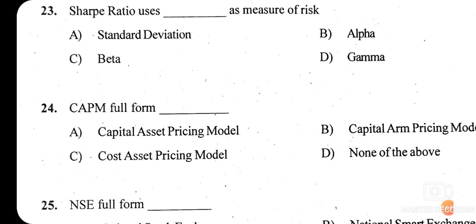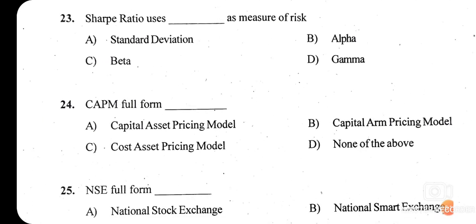Question twenty-four: CAPM full form — is it Capital Asset Pricing Model, Capital Arm Pricing Model, Cost Asset Pricing Model, or none of the above? The right answer is option A — Capital Asset Pricing Model. CAPM is a financial model that calculates the expected rate of return for an asset or investment.